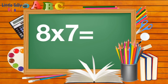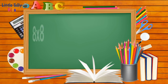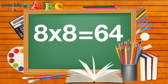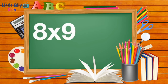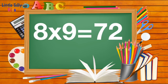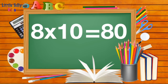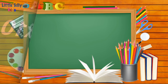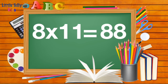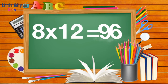Eight sevens are fifty-six. Eight eights are sixty-four. Eight nines are seventy-two. Eight tens are eighty. Eight elevens are eighty-eight. Eight twelves are ninety-six.